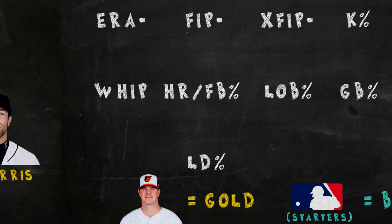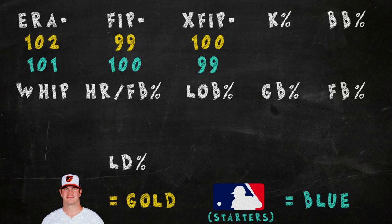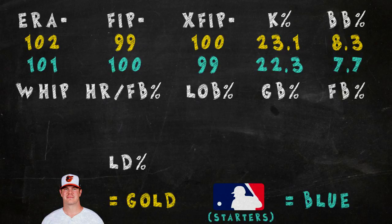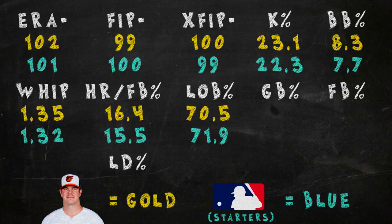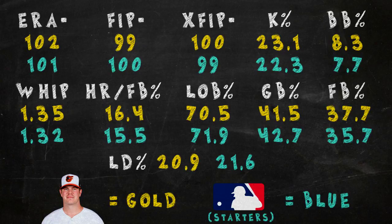Comparing him to the MLB average starting pitcher, Bundy was almost spot on in terms of run prevention. The reason ERA- and xFIP- aren't exactly 100 is because starters give up slightly more homers than relievers. Bundy strikes out and walks more batters than the average starter, though his WHIP is about on par. His left on base percentage and home run per fly ball rate are give or take a percentage point away from average, and his batted ball rates are all relatively close to average.